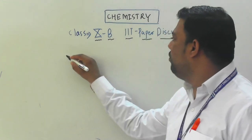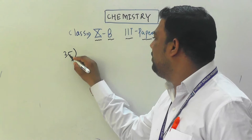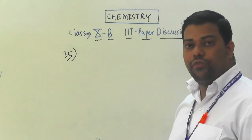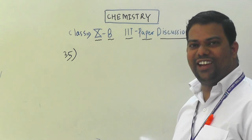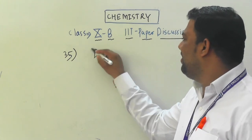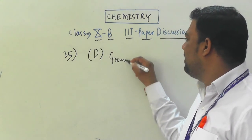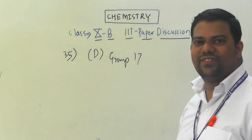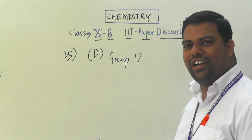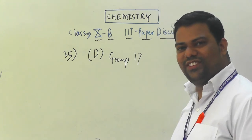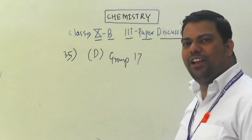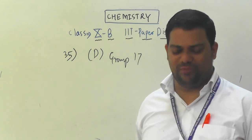Question number 35: which group contains the most electronegative elements? The answer is Group 17 — the halogens: fluorine, chlorine, bromine, iodine. These are the most electronegative elements. Among the entire periodic table, the most electronegative element is fluorine. So option D, Group 17, is correct.